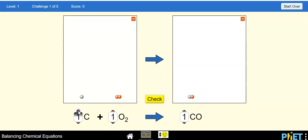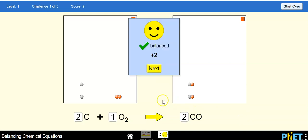You'd need another one of these. And then this is two. This is two. This is two. Check. And it's balanced.